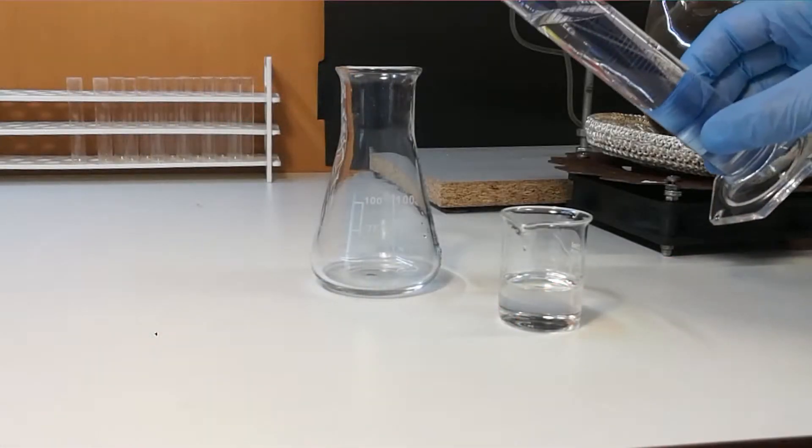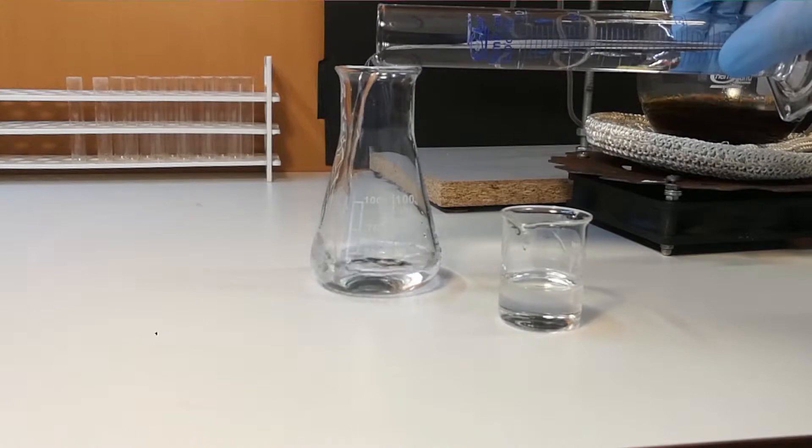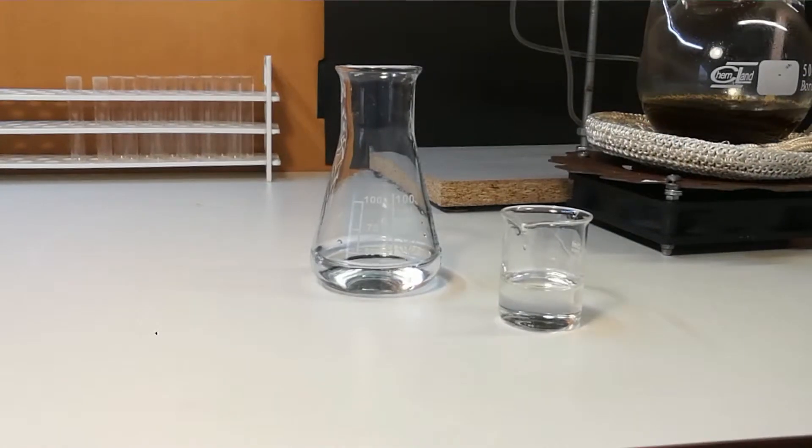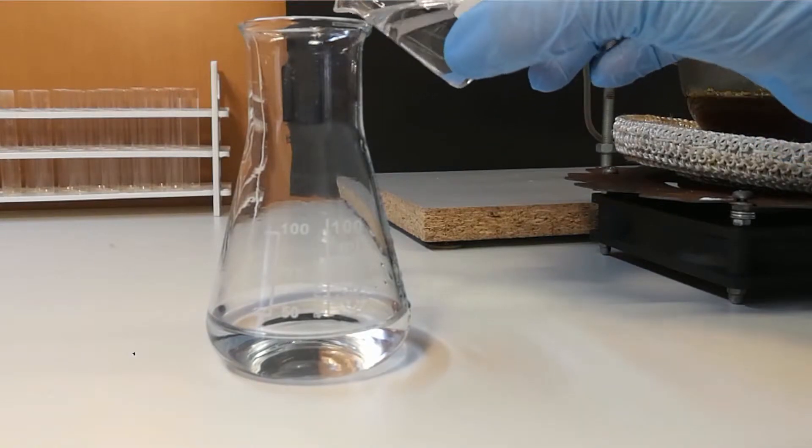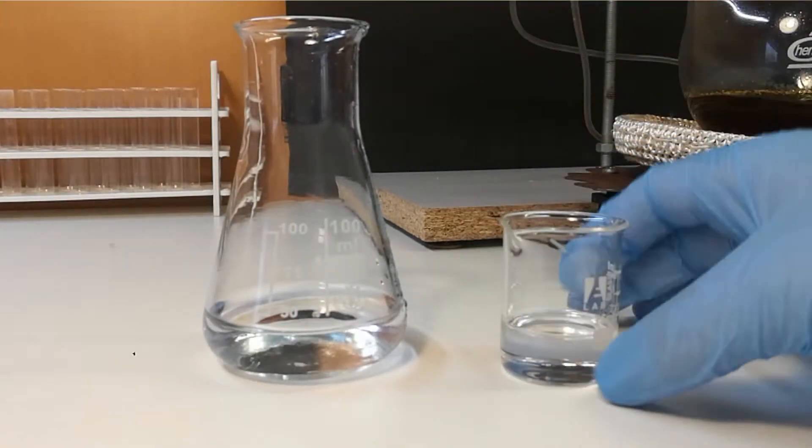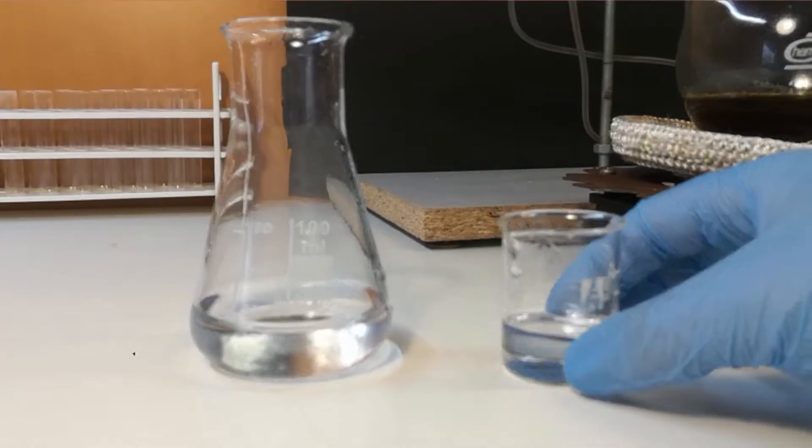In the meantime, we prepare sulfuric acid. Take about 15 grams of concentrated acid and gently pour it to 30 milliliters of water. Be aware of large amount of heat generated by addition of acid to water. Exact quantities are not necessary.